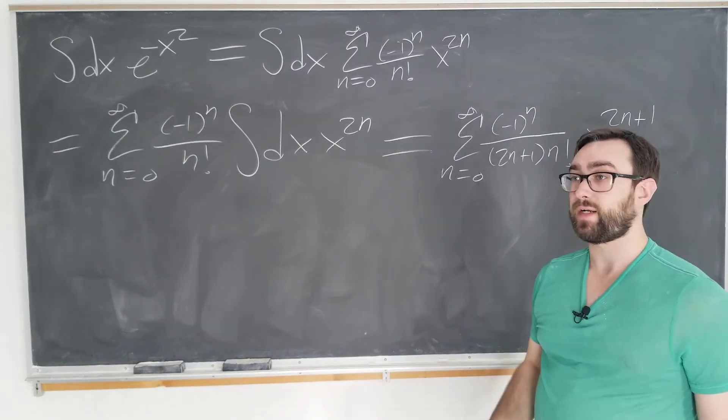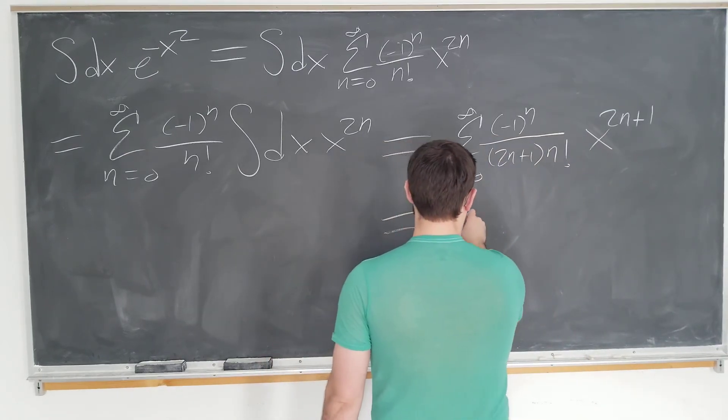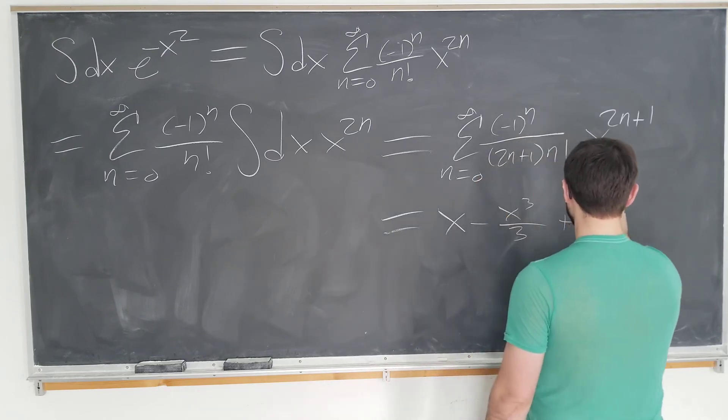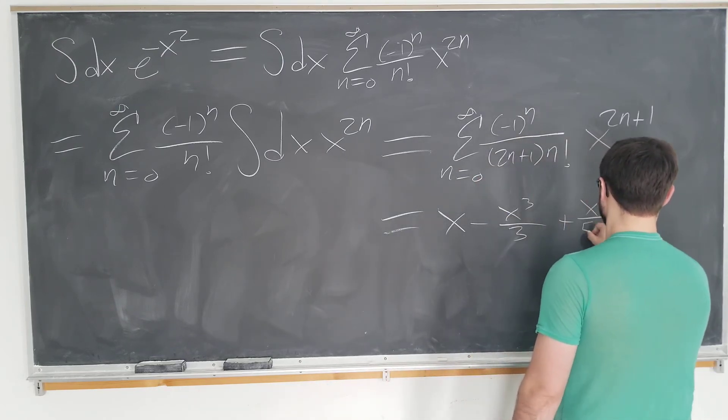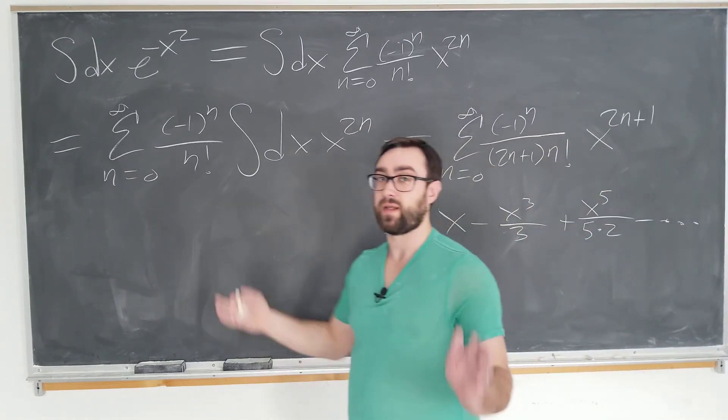Let's go ahead and write out a few terms so it's less abstract. It's just x minus x cubed over 3 plus x to the 5th over 5 times 2 minus higher order terms. And now we're done.